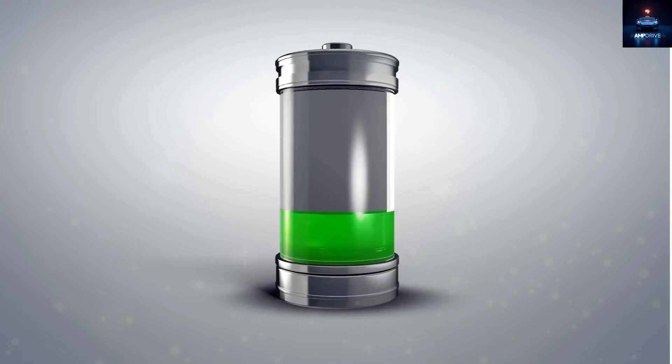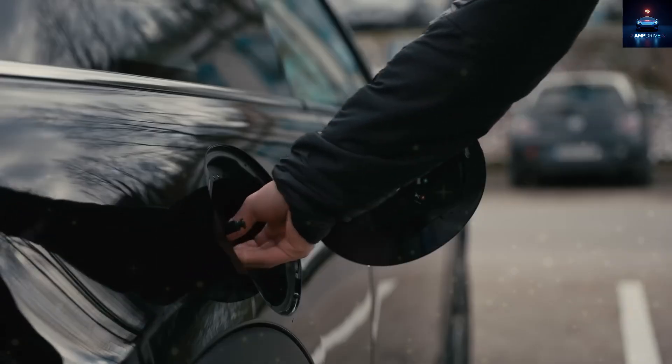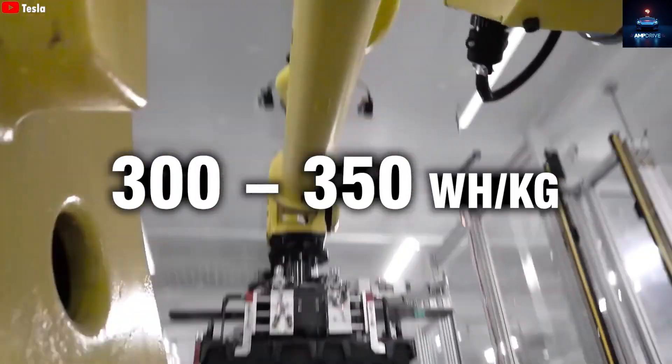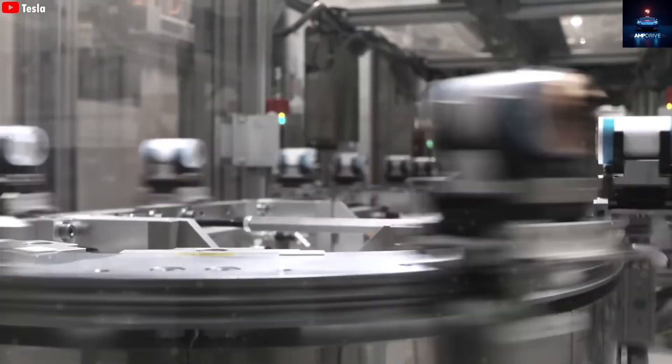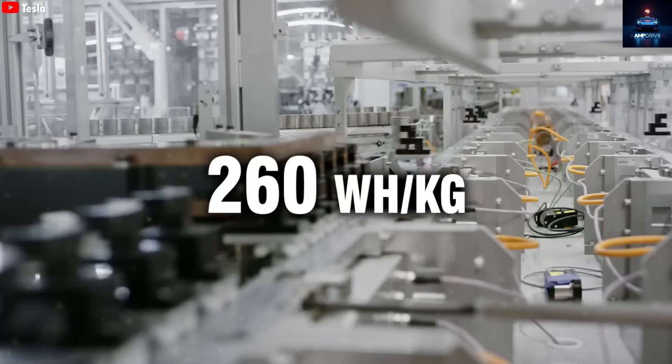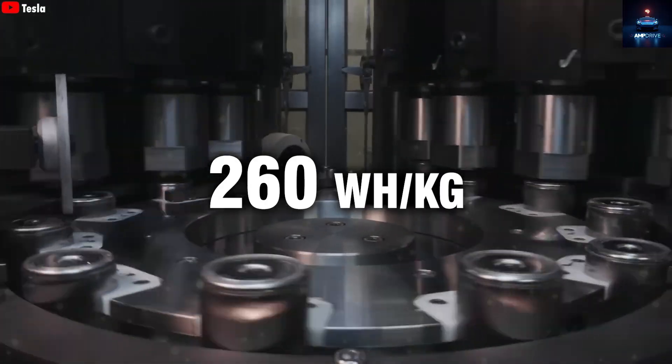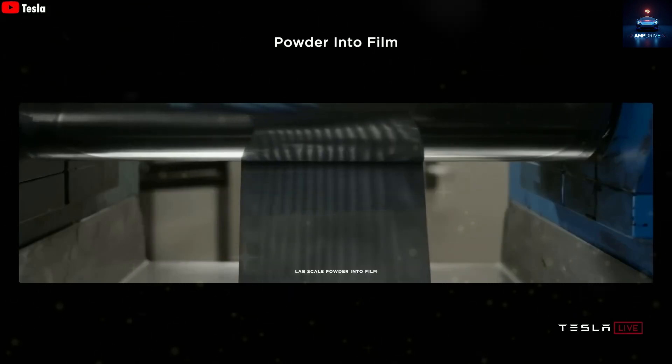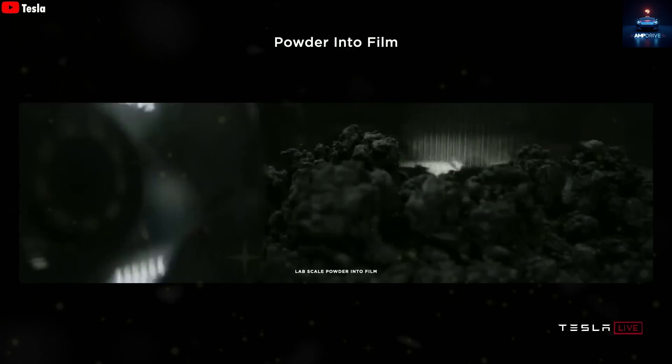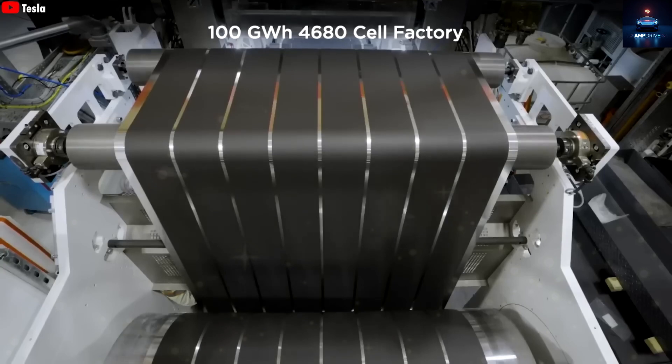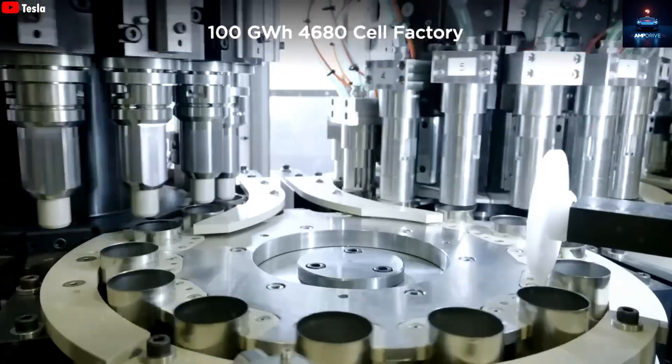Tesla's newest 4,680 battery has made big gains in this area. It now reaches energy density levels between 300 and 350 watt-hours per kilogram. That is 15 to 35% better than the older 2,170 lithium-ion battery, which had around 260 watt-hours per kilogram. The 4,680 also benefits from Tesla's dry electrode manufacturing process, which boosts both energy capacity and production efficiency.